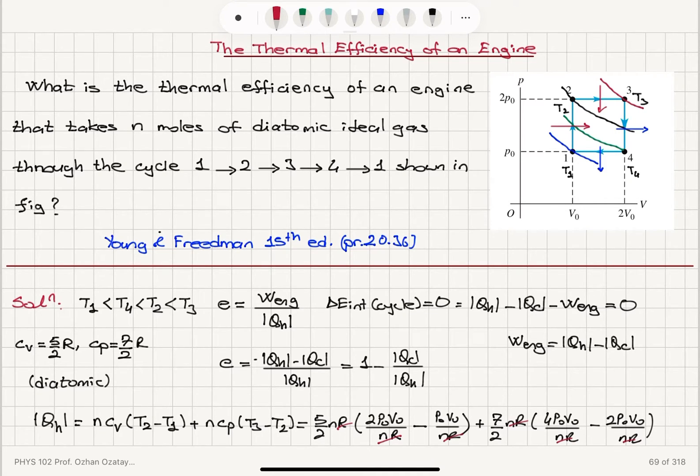For QC, if I complete this calculation here, this will be 5 over 2P0V0 plus 7P0V0, which is 19 over 2P0V0 for QH.